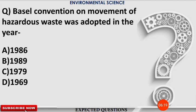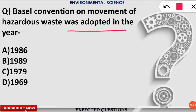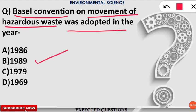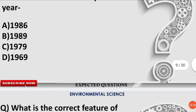The next question: the Basel Convention on the movement of hazardous waste was adopted in which year? The correct option is B — the Basel Convention was adopted in 1989, and it restricts the movement of hazardous waste among countries.